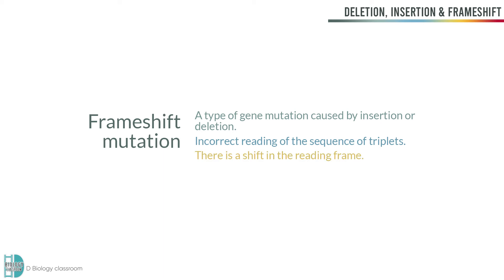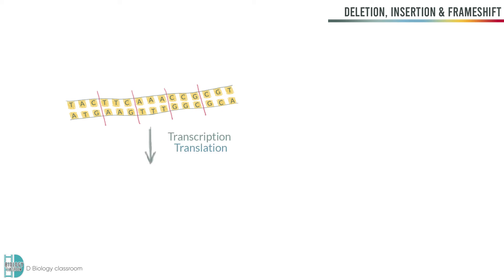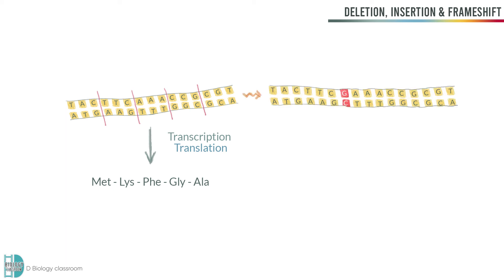Let's use an example to understand this. Here in this picture, we have a section of DNA which codes for five amino acids. After transcription and translation, these five amino acids should be found in the polypeptide. A mutation occurs where one extra base pair is added after the first two triplets. Since we read the codes three by three, this causes the whole of the rest of the codes after the first two triplets to be altered.